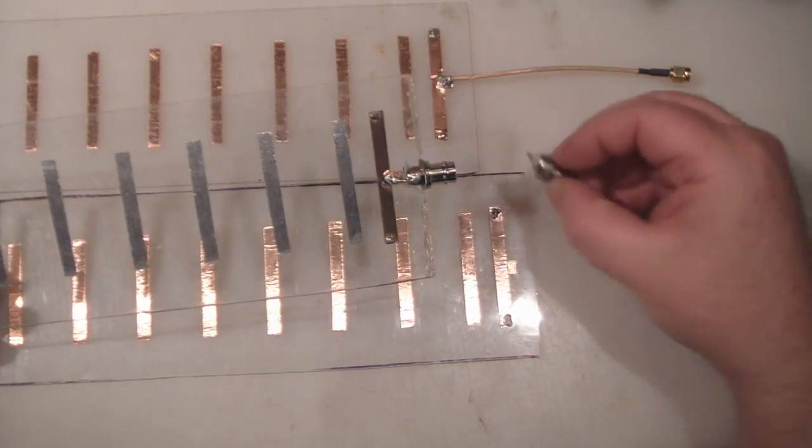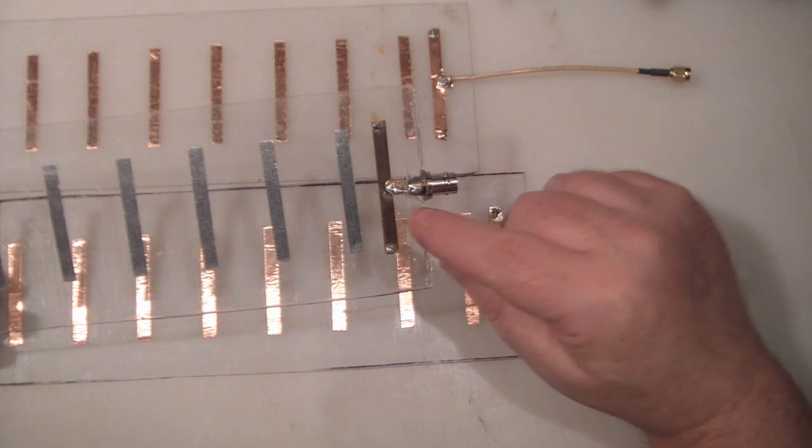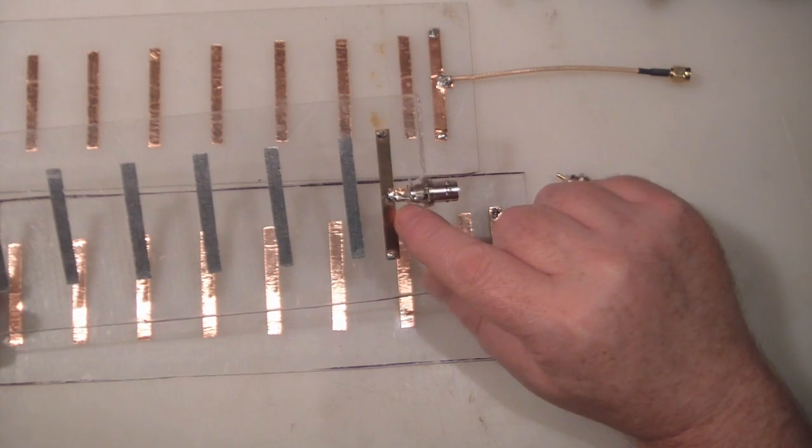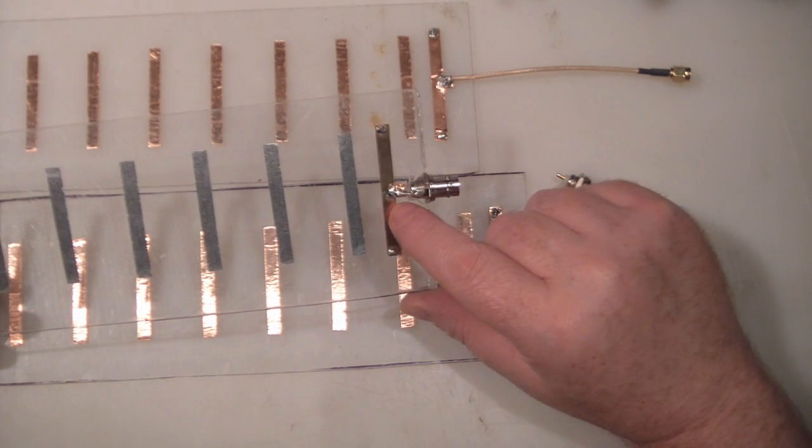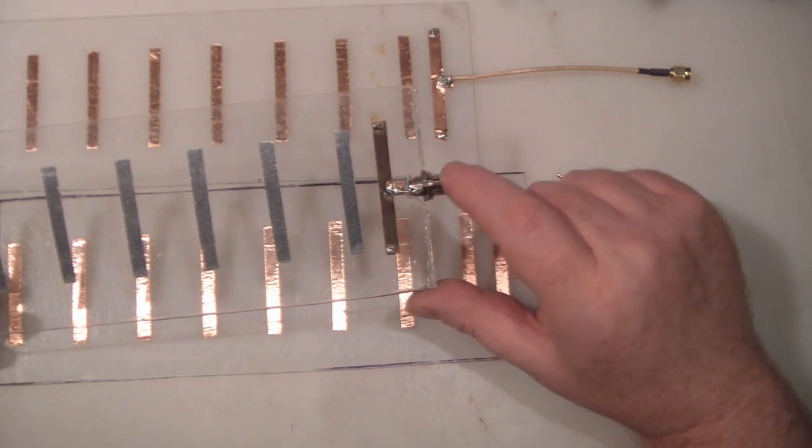I've used the little solder tag that you get with the BNC connector, bent it over, used a little bit of copper to extend it, and soldered the ground on here.